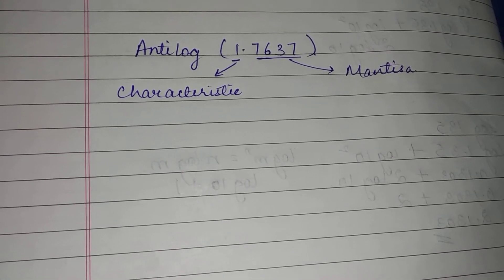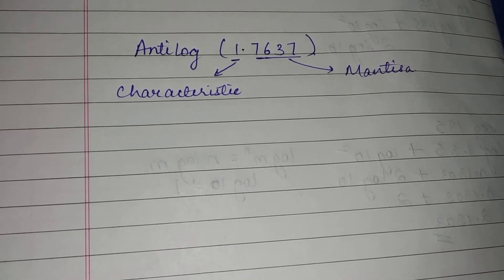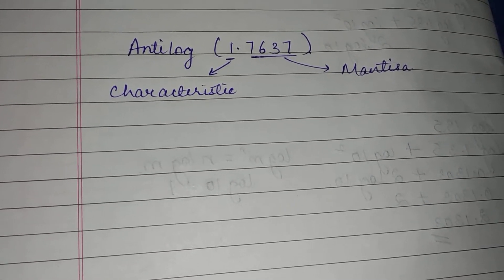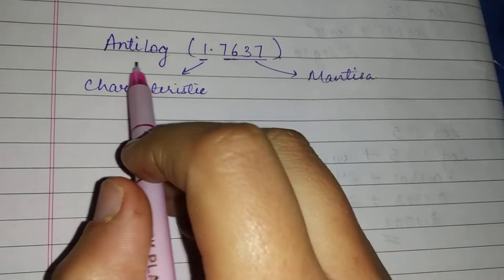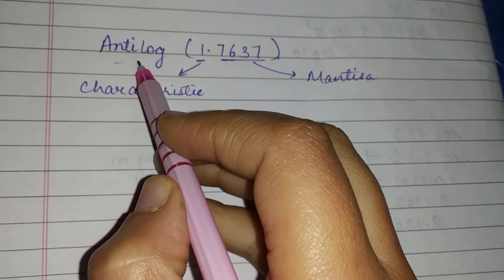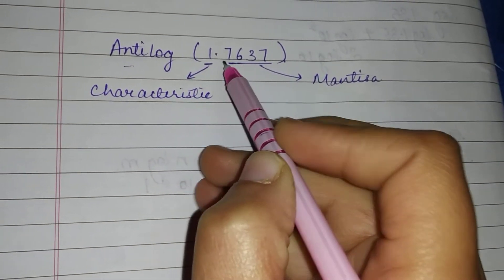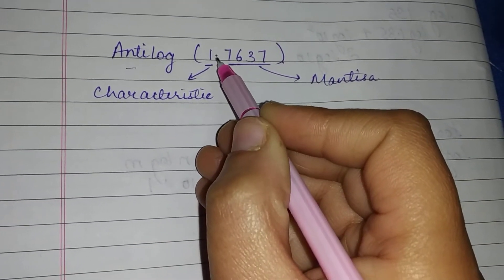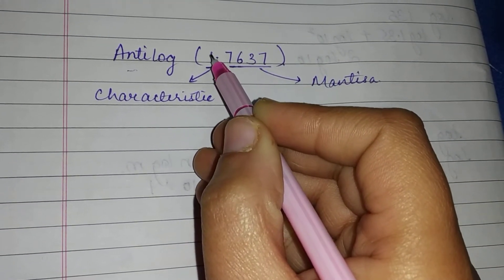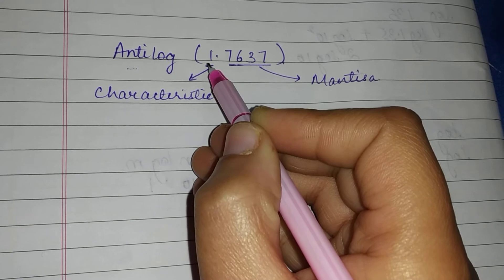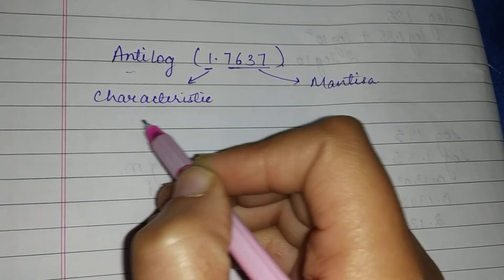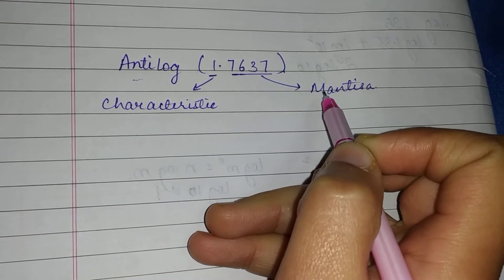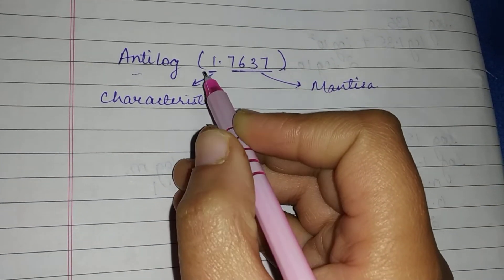In this video we will learn to find the value of antilog. Suppose we have to find the antilog of 1.7637. Before the decimal we are given one, which is known as the characteristic. After the decimal, whatever values we are given, that is known as the mantissa.